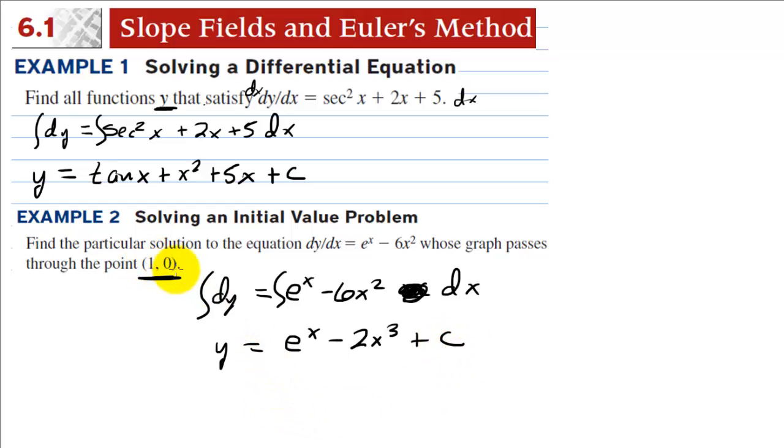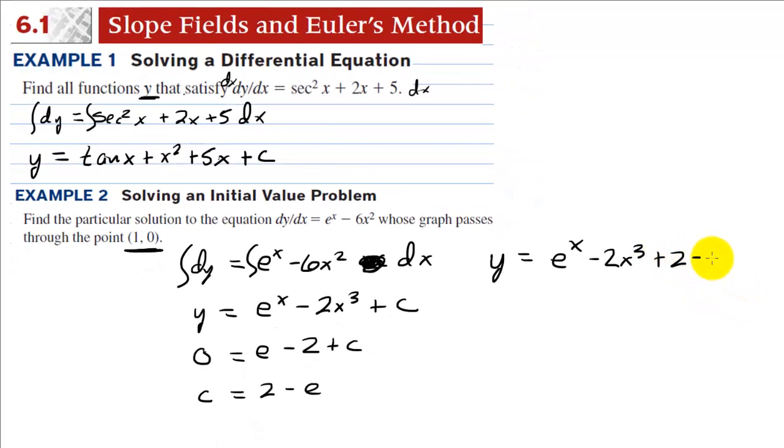We have the point (1, 0). So y is 0 when x is 1. So we have 0 equals e minus 2 plus C. So C equals 2 minus e. And adding the 2 minus the e, y ends up being e to the x minus 2x to the third plus 2 minus e.